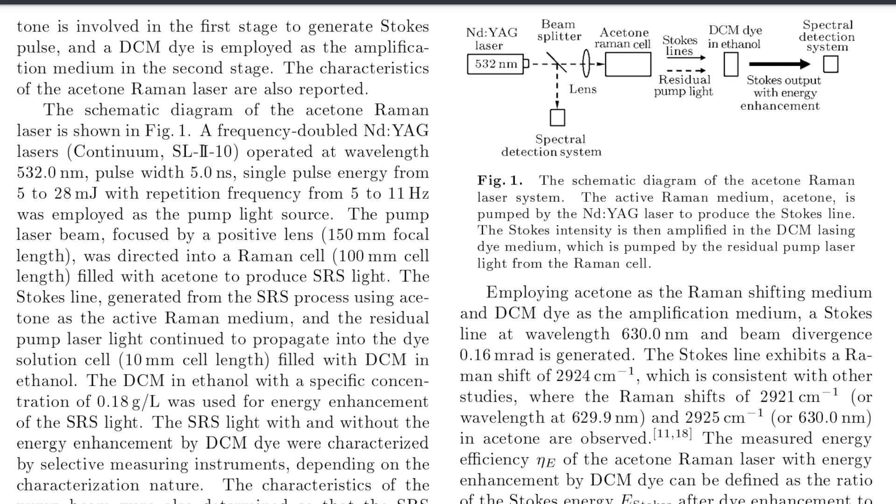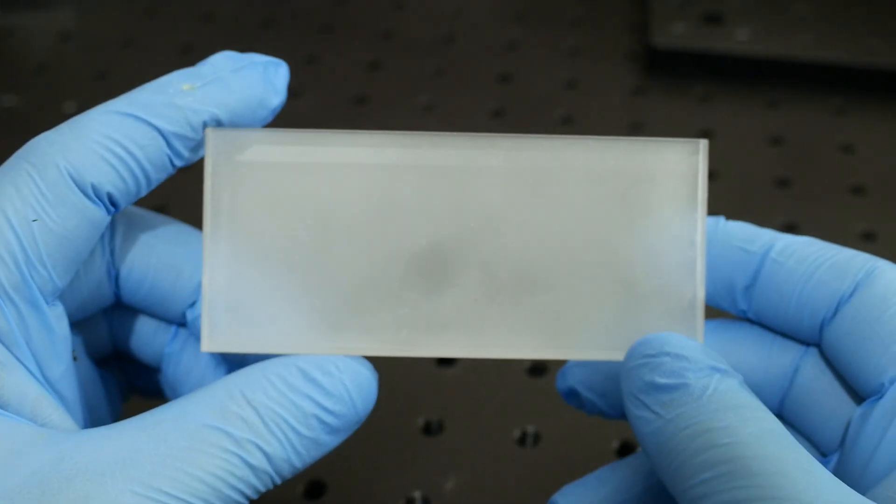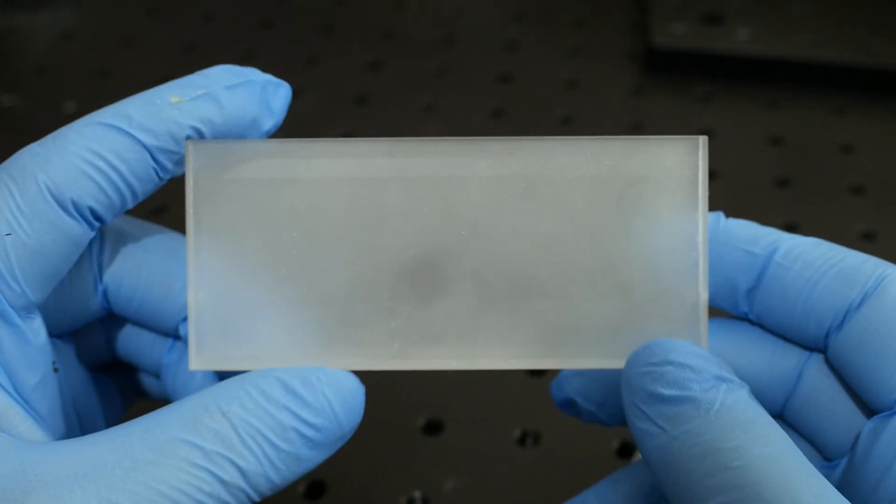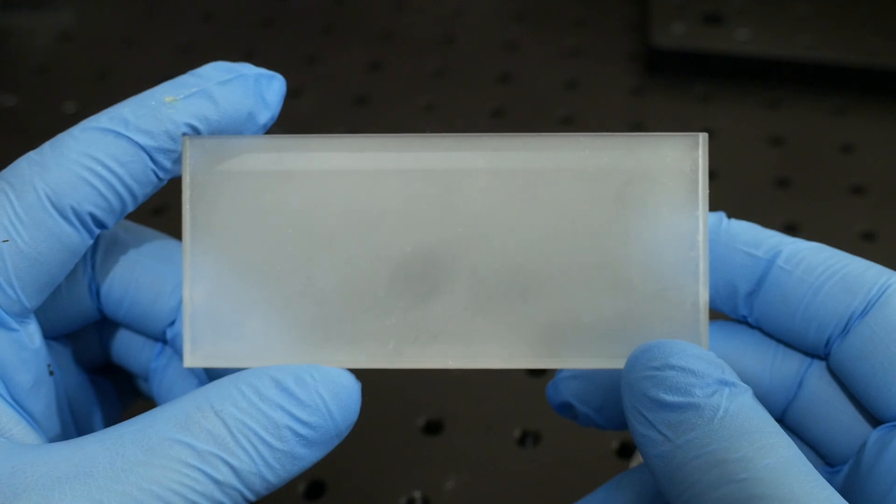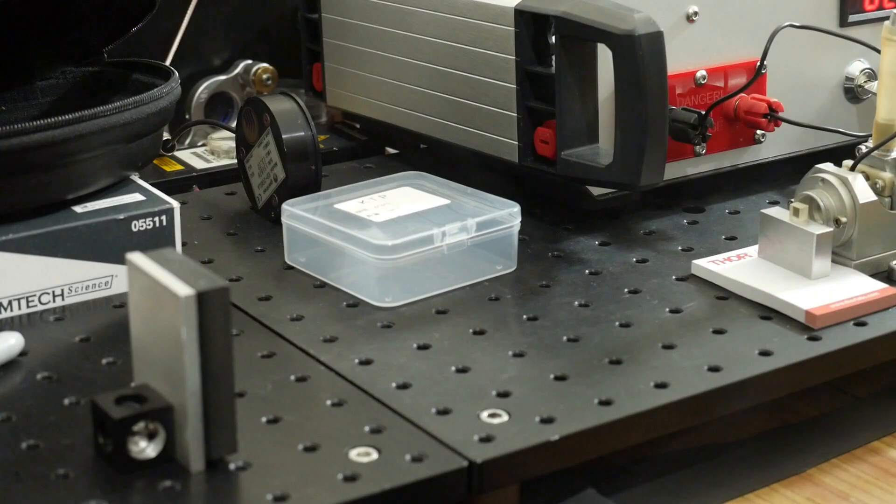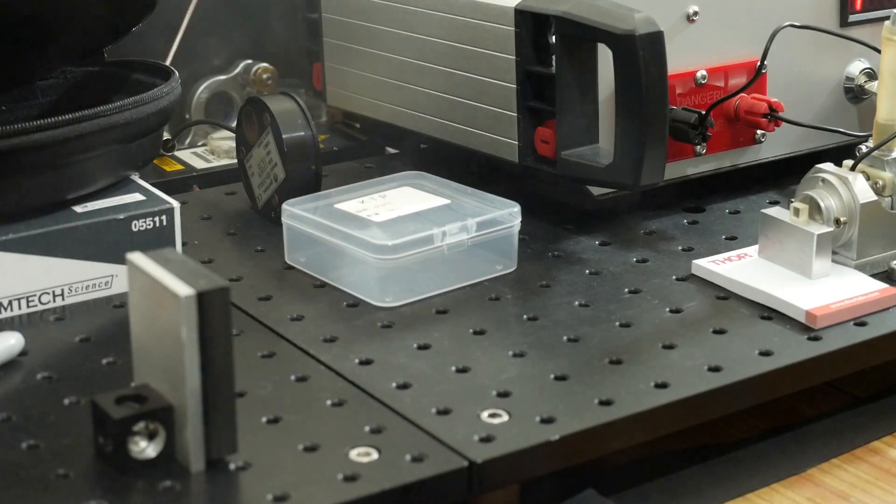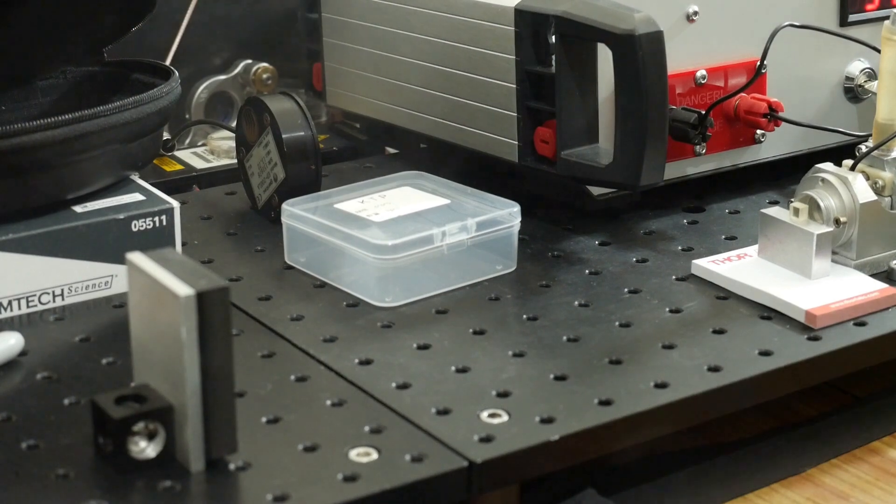I came across this paper which suggests that stimulated Raman scattering can be observed in a relatively short cell, just 10cm in length. I attempted to experiment with acetone and ethanol in a 10cm long cuvette, pumped by a frequency doubled tattoo laser that I rebuilt in a previous episode. However, I didn't see any stimulated Raman scattering in acetone or ethanol.